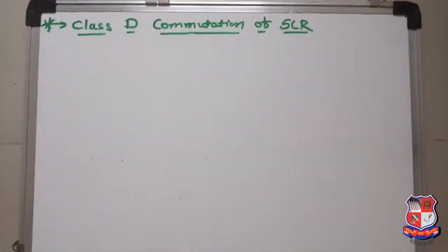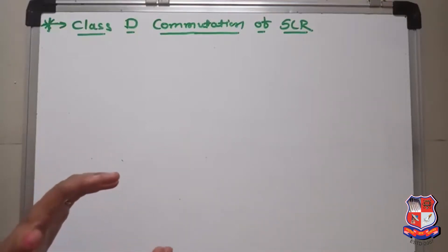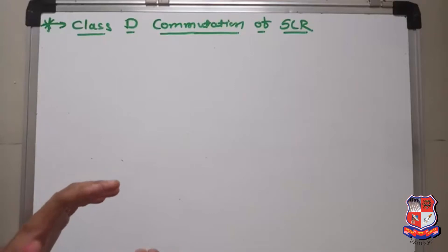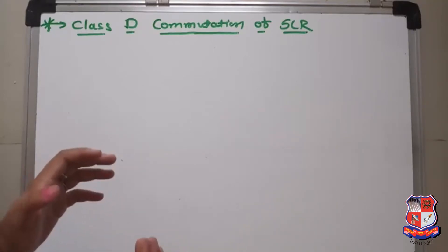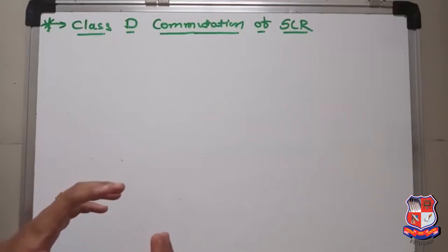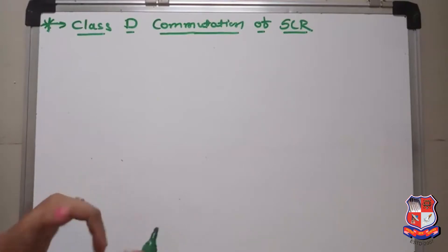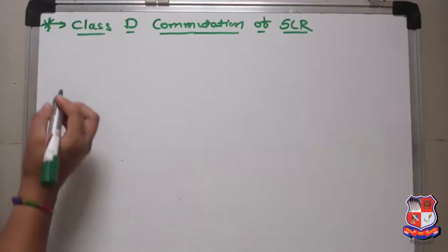Hello dear friends, myself is Roshni Parikh and today's topic of discussion is Class D Commutation of an SCR. As we know, Class D Commutation is also from the Force Commutation. In Force Commutation, the SCR is forced to turn off by using the External Commutation Circuit. In a Class D Commutation, the commutating circuit uses the elements: Inductor, Capacitor, and the Auxiliary Thyristor. Let's see the diagram of the Class D Commutation.